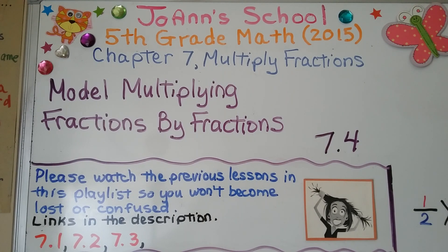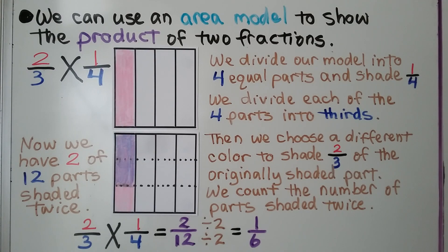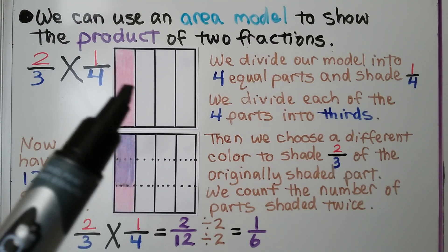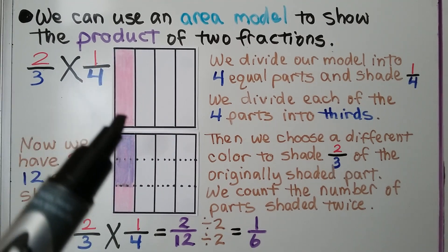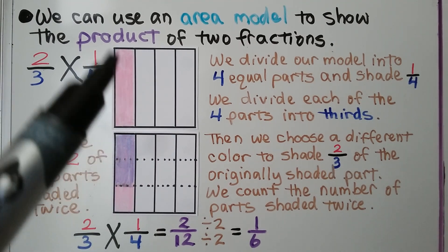Lesson 7.4: Model Multiplying Fractions by Fractions. We can use an area model to show the product of two fractions. We have two-thirds times one-fourth. We divide our model into four equal parts and shade one-fourth.